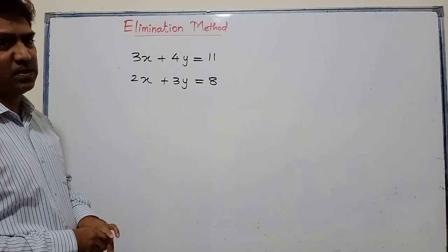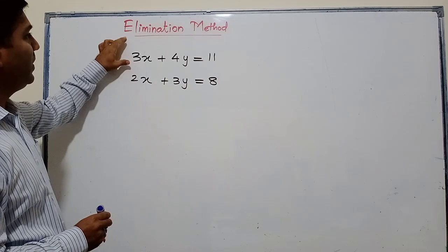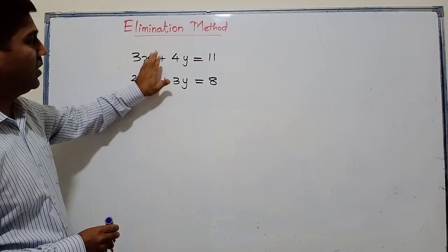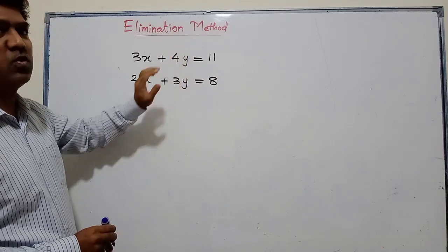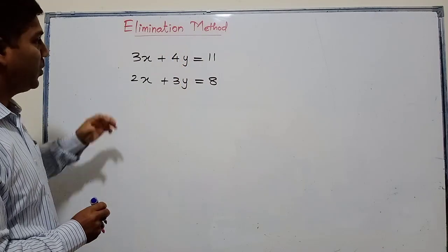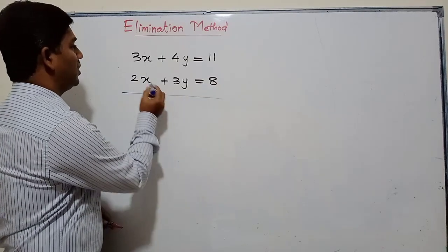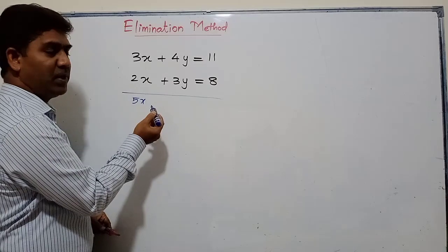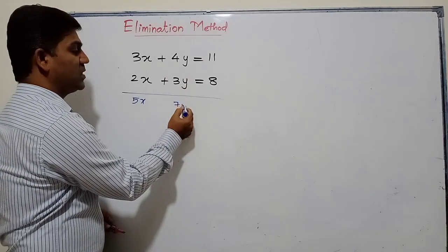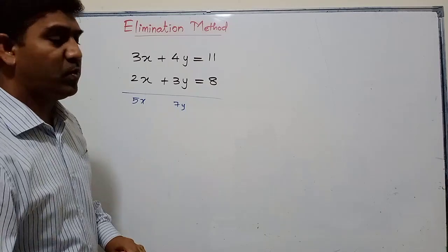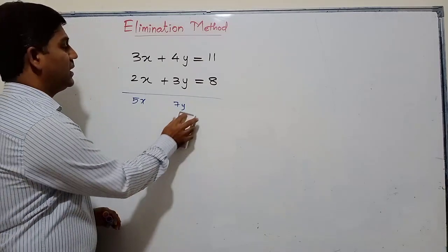Now what does elimination method mean? You need to eliminate one of the variables - either you eliminate x and solve for y, or you eliminate y and solve for x. Suppose I simply add both equations. 3 plus 2 is 5, 4 plus 3 is 7 - they're not getting eliminated. So to eliminate, I have to get the coefficients the same.